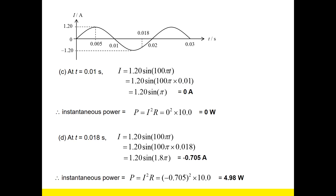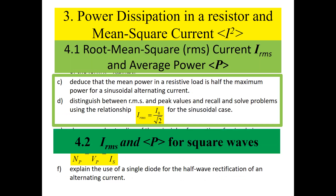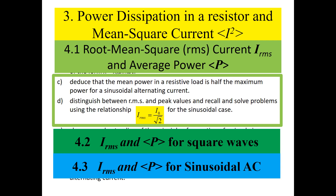This begs a question: in direct current it is very easy to determine the power of a circuit. The current is fixed, the resistance is fixed — I²R gives you an answer. But in AC the power varies. This brings us to the second part of the chapter, where I introduce the mean square current. You've already learned about root mean square speed in temperature — it's the same idea applied to current.